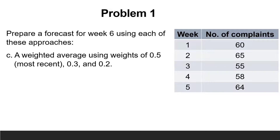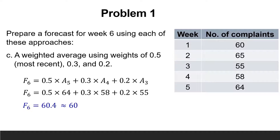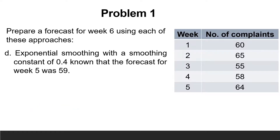The next requirement is to calculate the forecast for week 6 using the weighted average with weights of 0.5, 0.3, and 0.2. The highest weight of 0.5 is assigned to the most recent period, week 5; 0.3 for week 4; and the lowest weight 0.2 for week 3. So F6 = 0.5 × A5 + 0.3 × A4 + 0.2 × A3 = 0.5 × 64 + 0.3 × 58 + 0.2 × 55 = 60.4, approximately equal to 60.